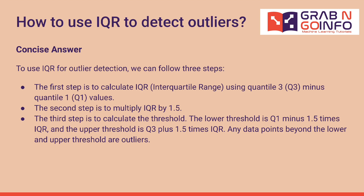Follow-up question 1: how to use IQR to detect outliers. To use IQR for outlier detection, we follow three steps. First, calculate IQR using Q3 minus Q1. Second, multiply IQR by 1.5. Third, calculate the thresholds: the lower threshold is Q1 minus 1.5 times IQR, and the upper threshold is Q3 plus 1.5 times IQR. Any data points beyond these thresholds are outliers.